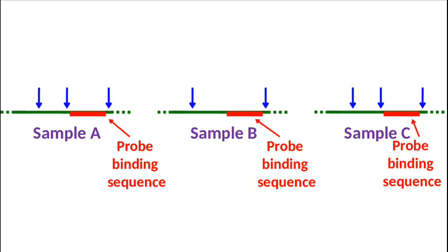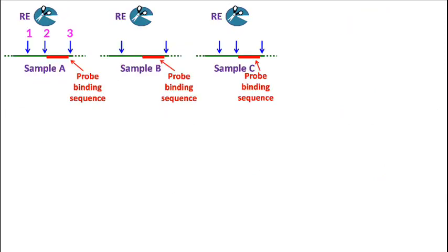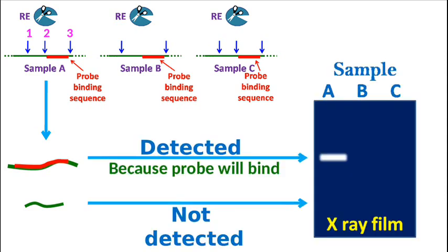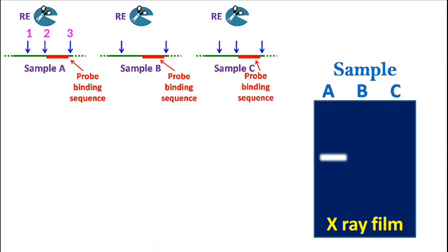Let's say sample A has three restriction sites. Upon restriction digestion, two fragments will be produced. Out of the two, only one has the probe binding sequence. Hence, one band will be observed in the autoradiogram.